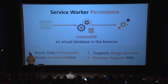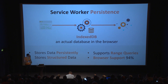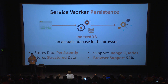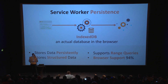Persistence in service workers is handled differently than the typical browser storage APIs. Session storage and local storage are not supported because they're synchronous. The supported persistence APIs are: IndexedDB and the service worker cache storage. IndexedDB is an actual database in the browser, typically backed by SQLite in the browser implementation. It stores data persistently, can structure data with fields, supports semi-structured data somewhat like MongoDB, is not just a key-value store, and supports limited range queries with efficient lookups. Any browser that has service workers also has IndexedDB.